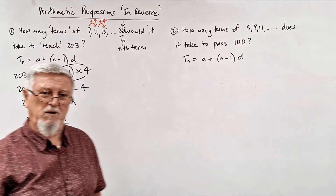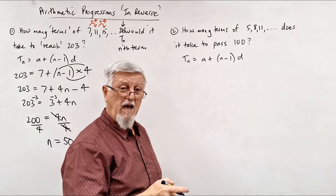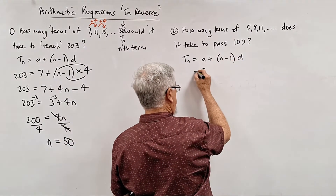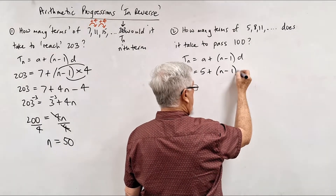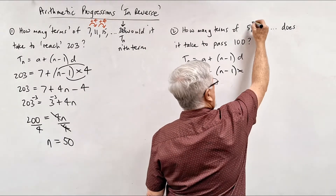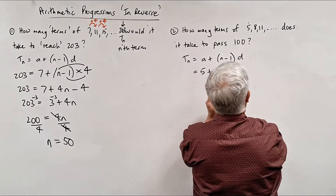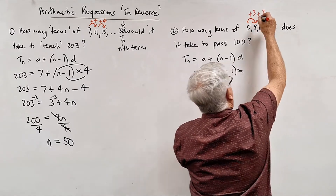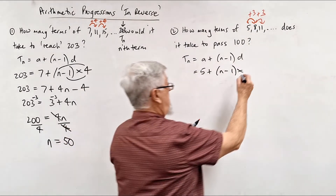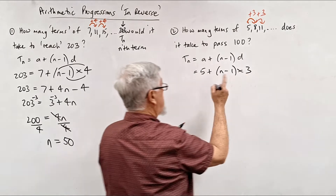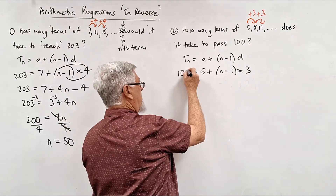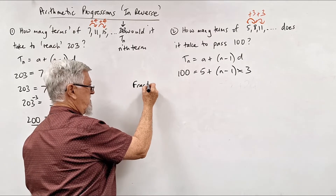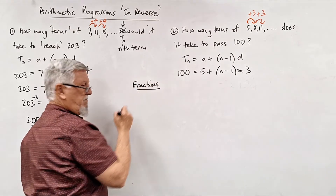Now the next one — same type of question. Let's have a look. We know a = 5, it's n minus 1, and this time we're going up by 3s, so d = 3. We want to find which term equals 100. The problem that's going to come up here involves fractions, and so many people make mistakes with fractions.